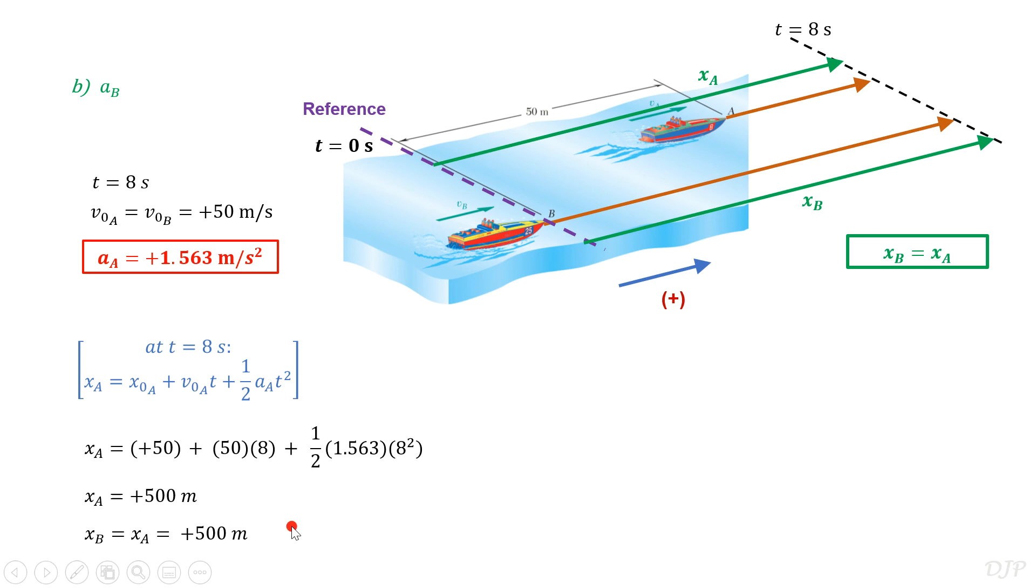Now that we have x sub B, we can use again the third kinematic formula. And by substitution, we can notice that only variable a sub B is left unknown. This allows us to get acceleration of boat B is equal to positive 3.125 meters per second square.